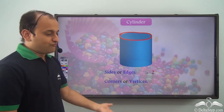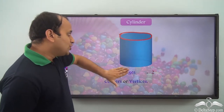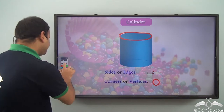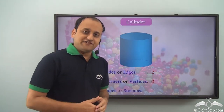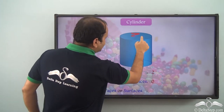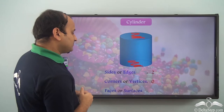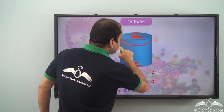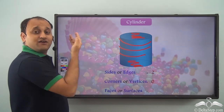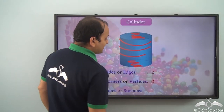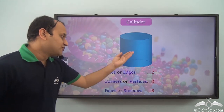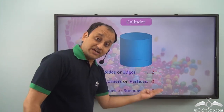What about corners or vertices? There are no corners or vertices in the case of a cylinder — zero. What about faces or surfaces? We have one at the top, one at the bottom, and then we have this curved face, which is one single face. So how many faces do we have? We have three faces. In the case of cylinder, we have two edges, zero vertices, and three faces.